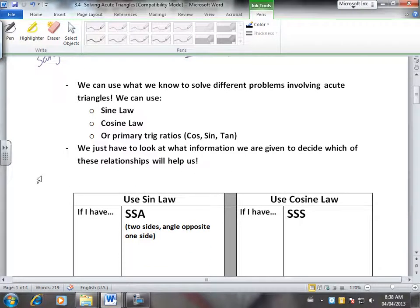We can use what we've learned to solve different problems in a variety of ways. We can use our sine law, cosine law, or our primary trig ratios, and this would be SOH-CAH-TOA. Basically we have to look at what information do we have. If we have a right triangle, we can use our primary trig ratios.